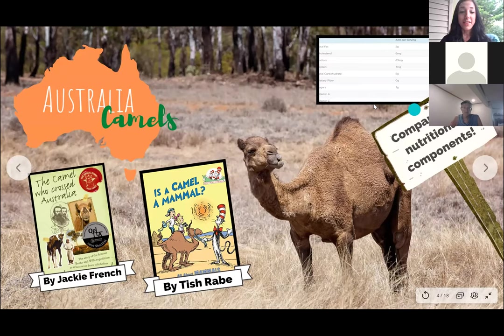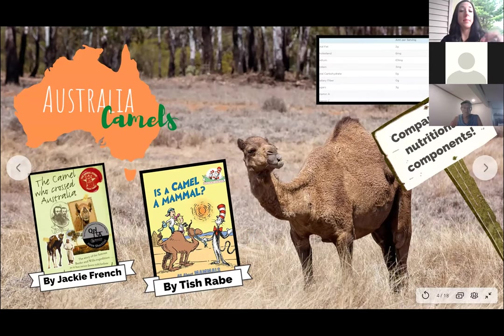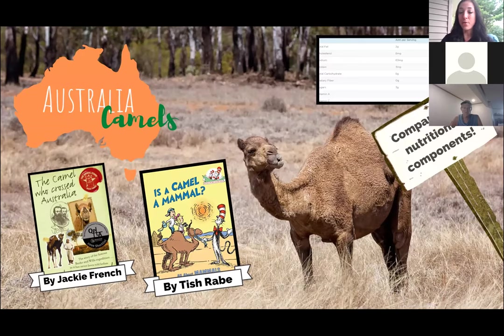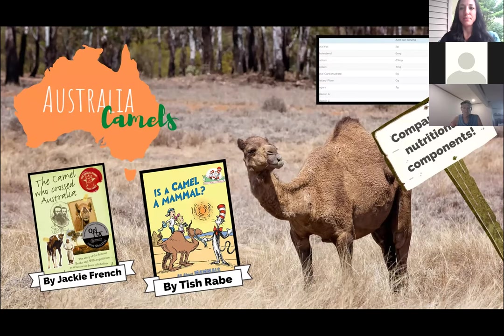You could read a couple of little books. One is called A Camel, A Mammal — it's a Dr. Seuss-style book by Trish Rabe, looking at what a mammal is and the characteristics of a camel versus other animals. That ties in nicely with dairy for your younger students.